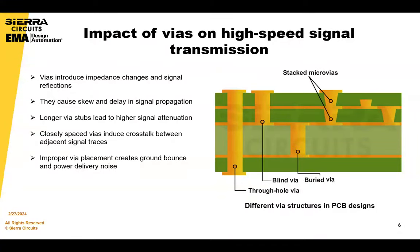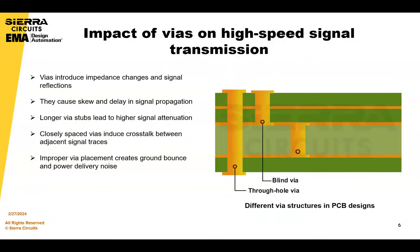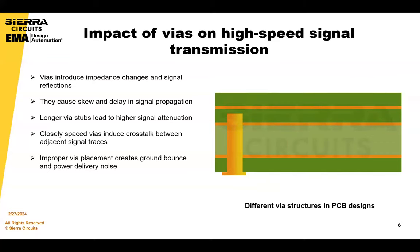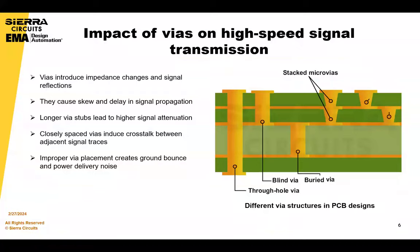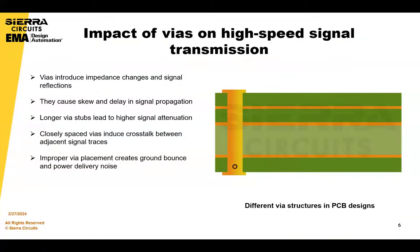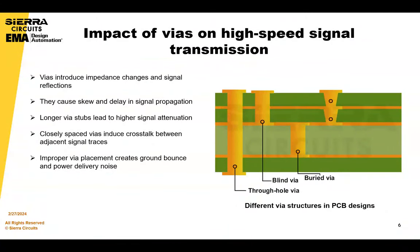Due to variations in the VIA geometries and placements, signals traveling through these different VIAs may experience skew, resulting in discrepancies in arrival times. That's one issue. Longer VIA stub lengths can introduce additional resistance and capacitance, leading to higher signal attenuation.